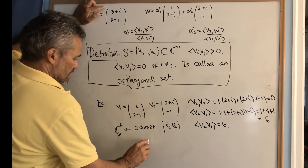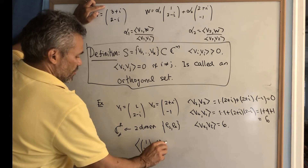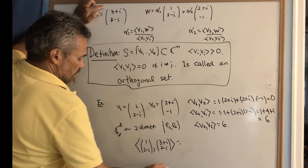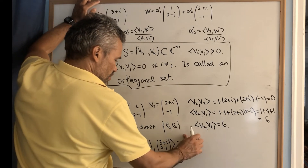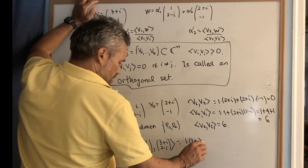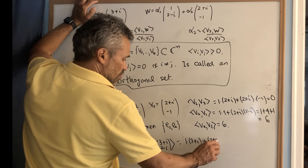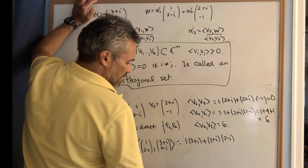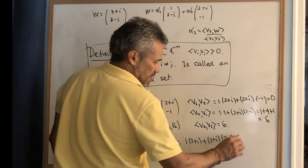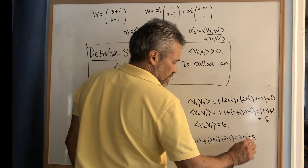Computing ⟨v₁, w⟩: take v₁ = (1, 2−i) dotted with w = (3+i, 2−i). This gives 1·(3+i) plus the conjugate of (2−i) which is (2+i) times (2−i). That is (3+i) + (2+i)(2−i) = (3+i) + (4+1) = (3+i) + 5.